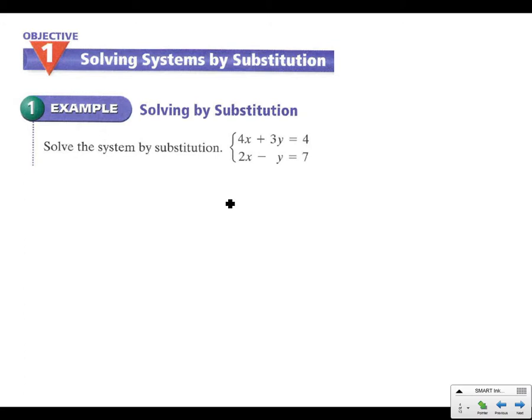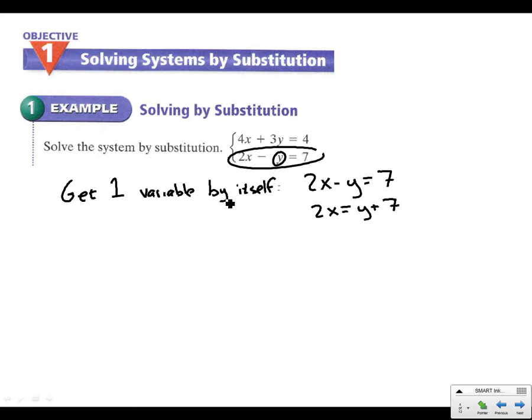Example 1. We're going to use substitution here. So solve the system by substitution. Here's what we need to do. First, get one variable by itself. So in this case, I think the easiest thing to do would be to get y here by itself. So originally we had 2x minus y equals 7. I can move the y to the other side. So 2x equals y plus 7. I'll bring the 7 over here. 2x minus 7 equals y. And now I have y all by itself.